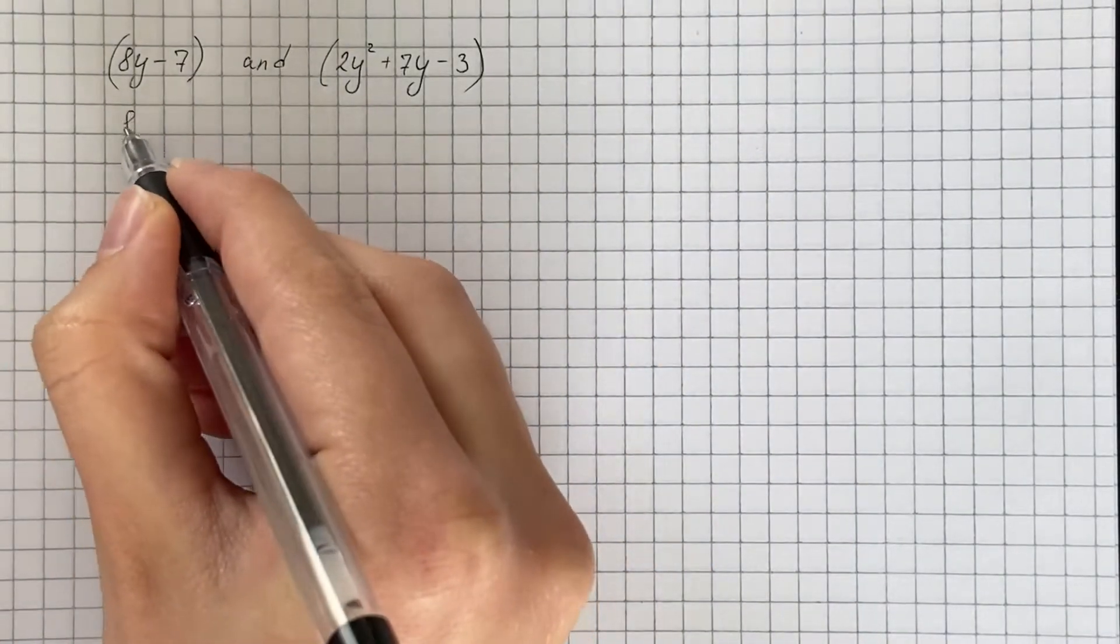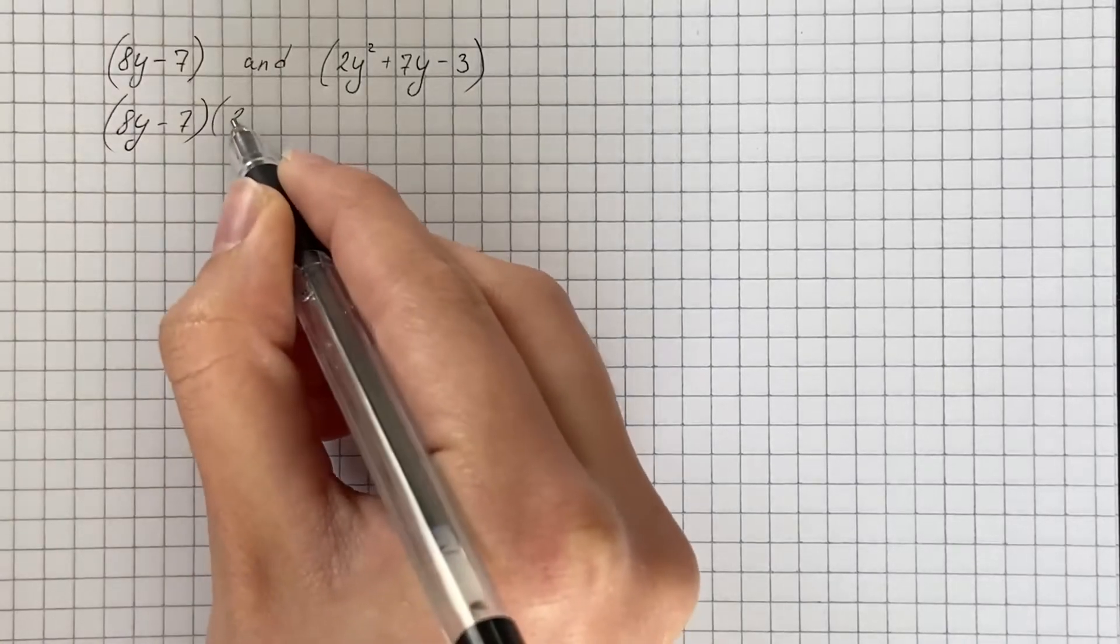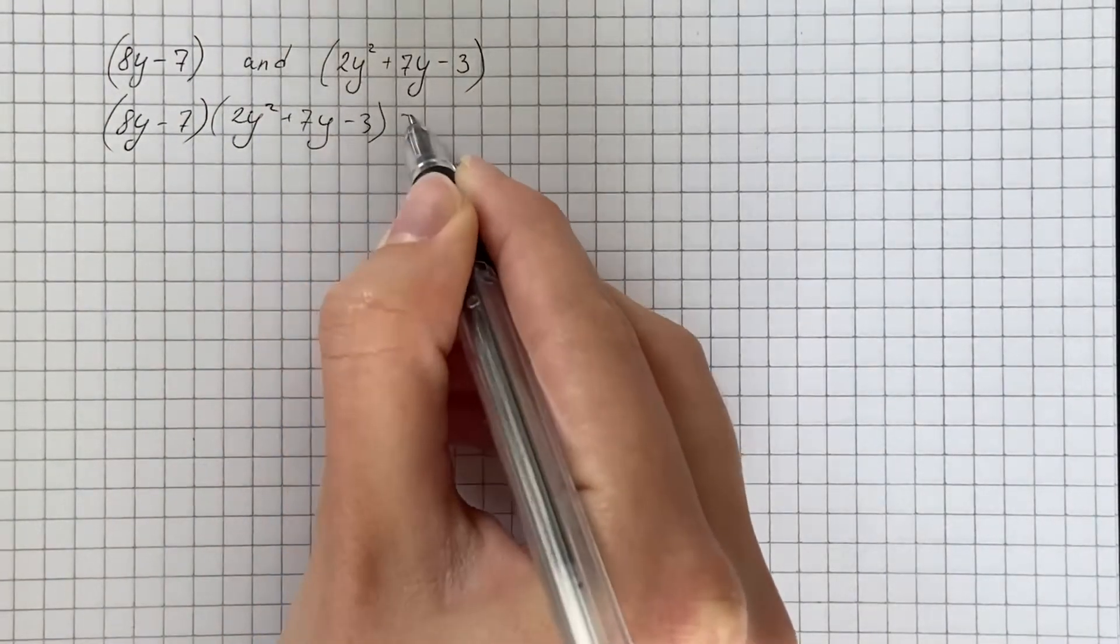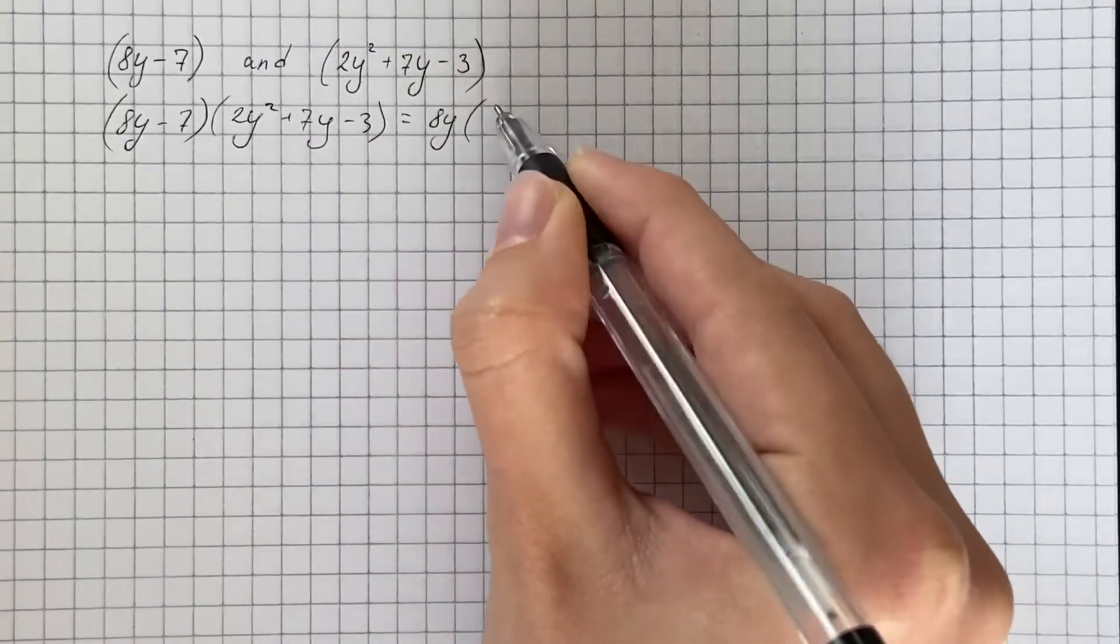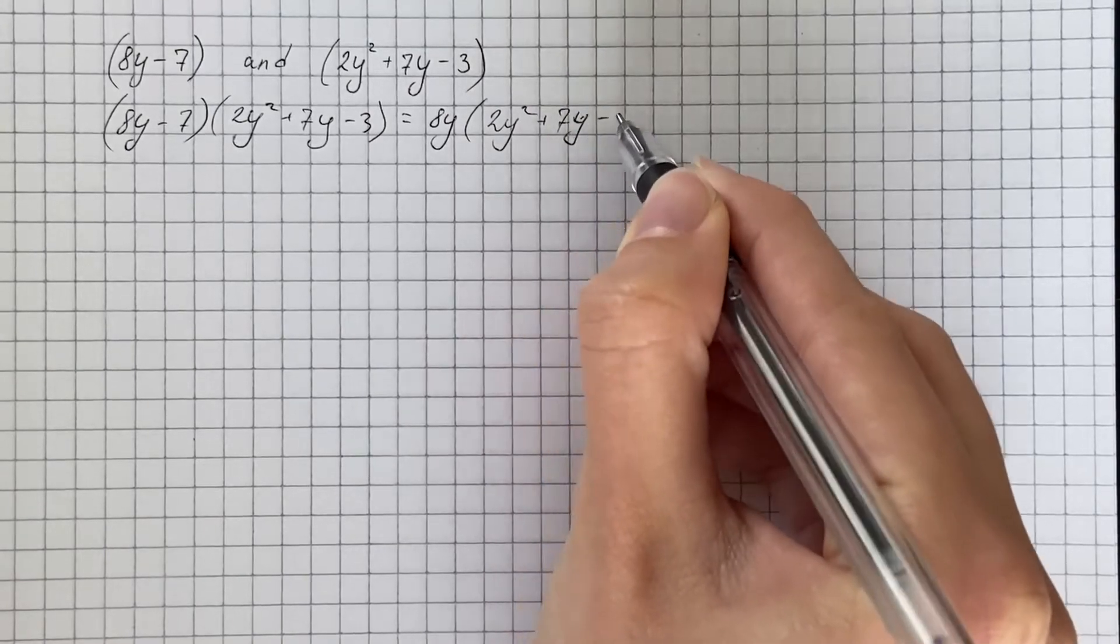Therefore we get that 8y minus 7 times 2y squared plus 7y minus 3 equals 8y times 2y squared plus 7y minus 3.